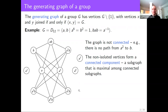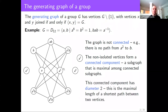The distance between a pair of vertices in a connected component is the length of the shortest path between them. For example, A and B have distance 1, whereas A and A to the fifth have distance 2 because they're not joined by an edge, but we can go from A to AB to A to the fifth. The diameter of a connected component is the maximal distance between any pair of vertices, and it's easy to check that this component has diameter 2.